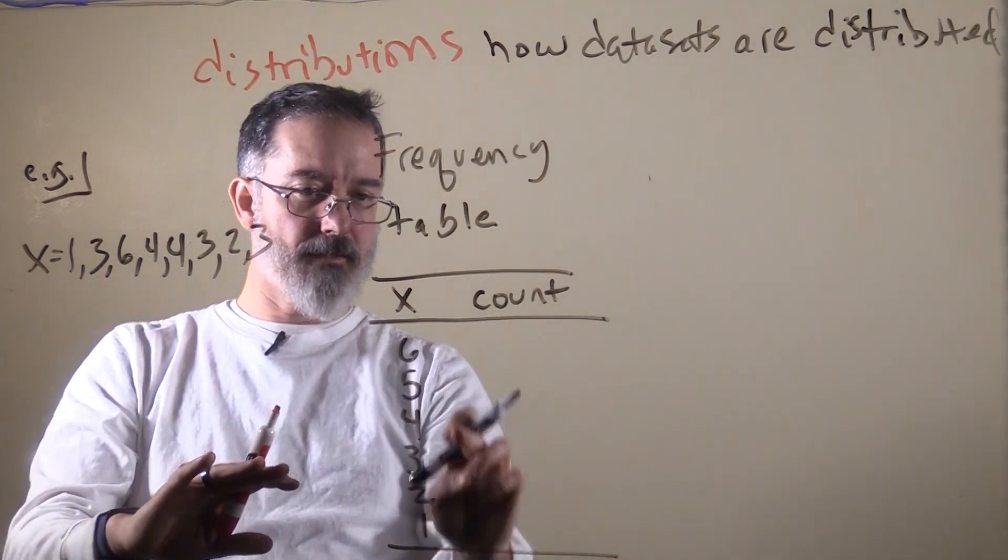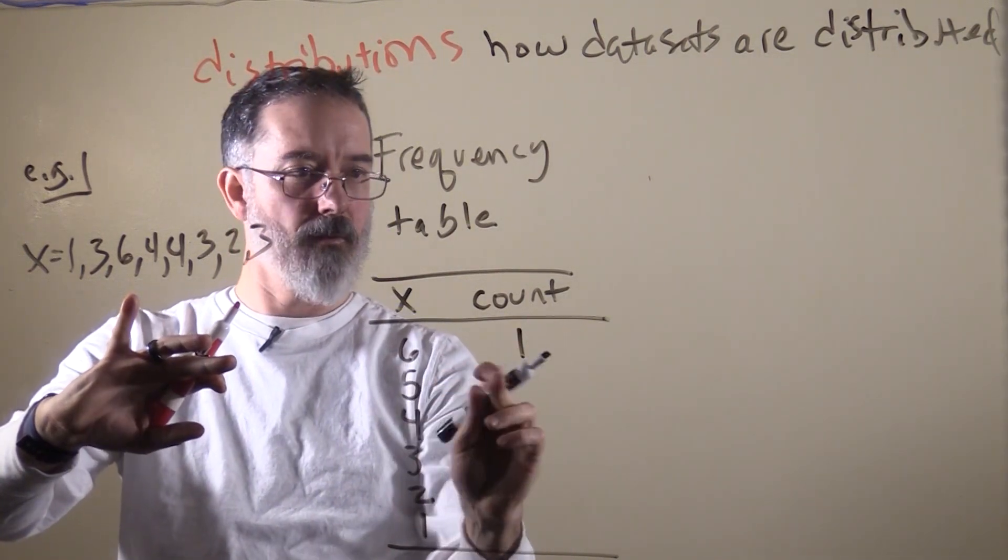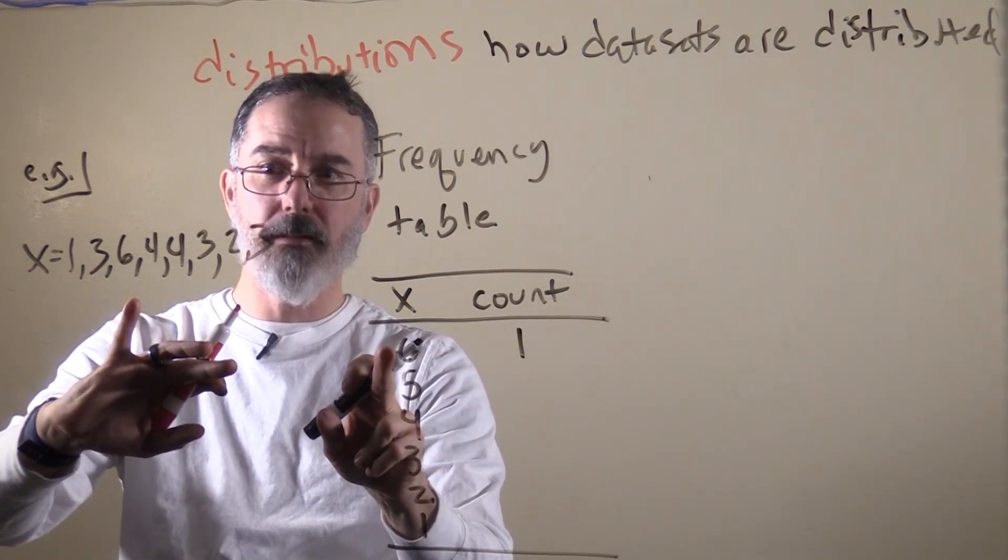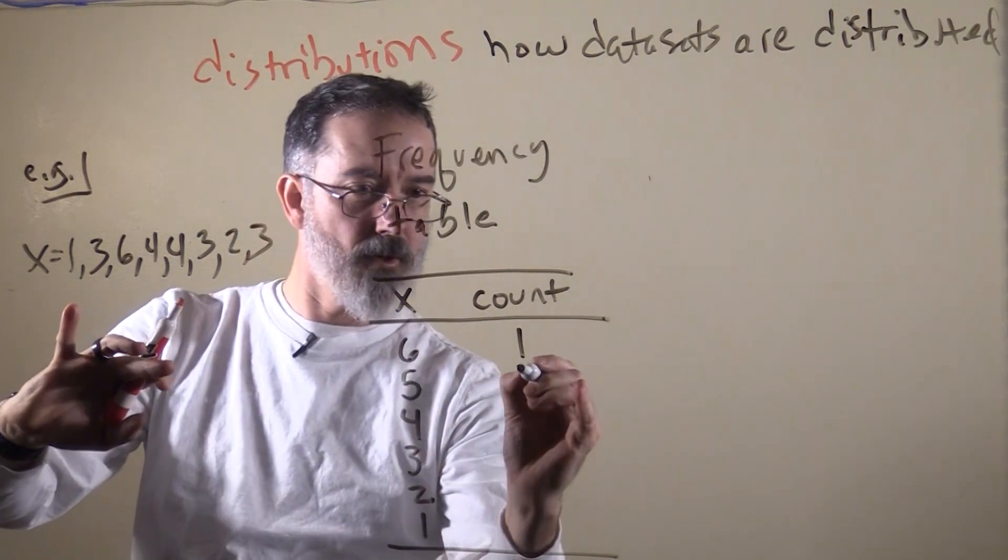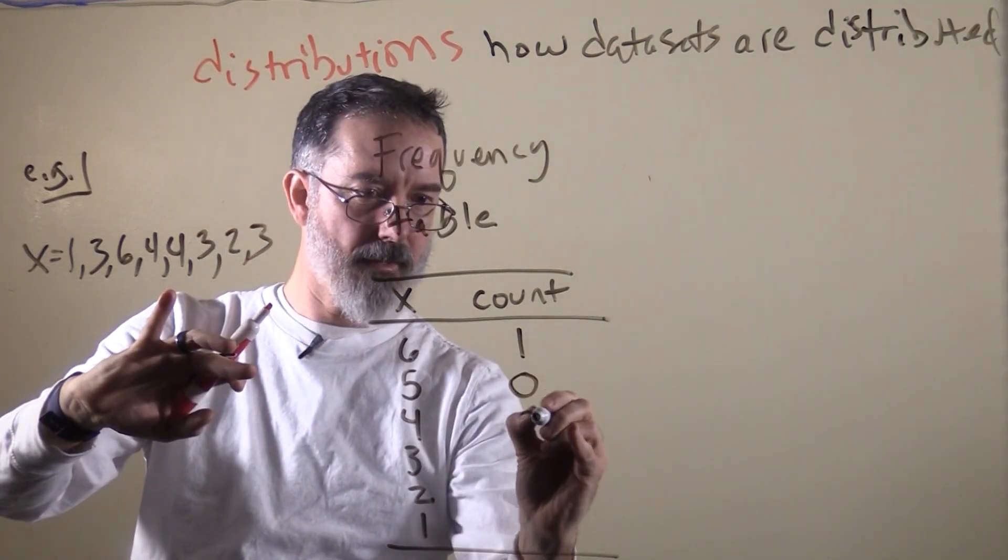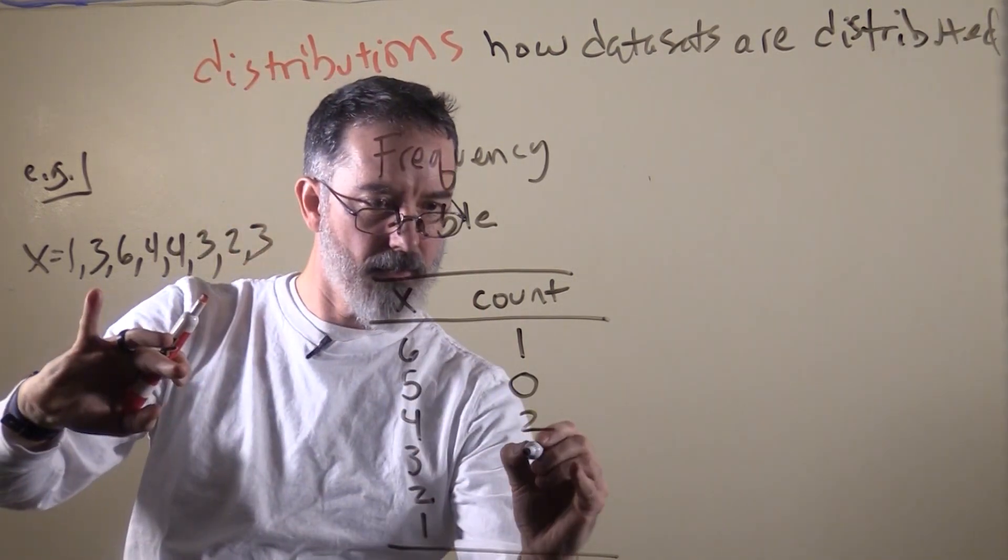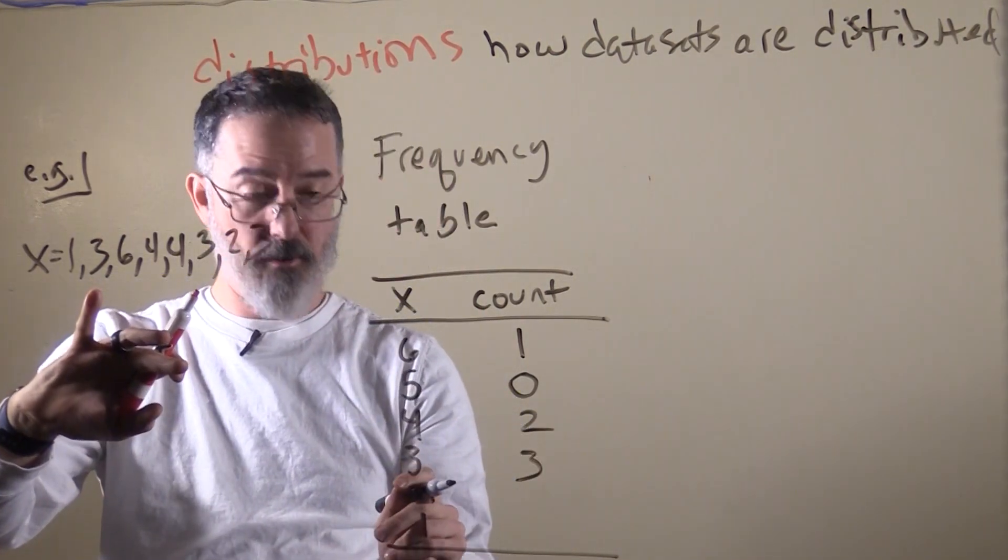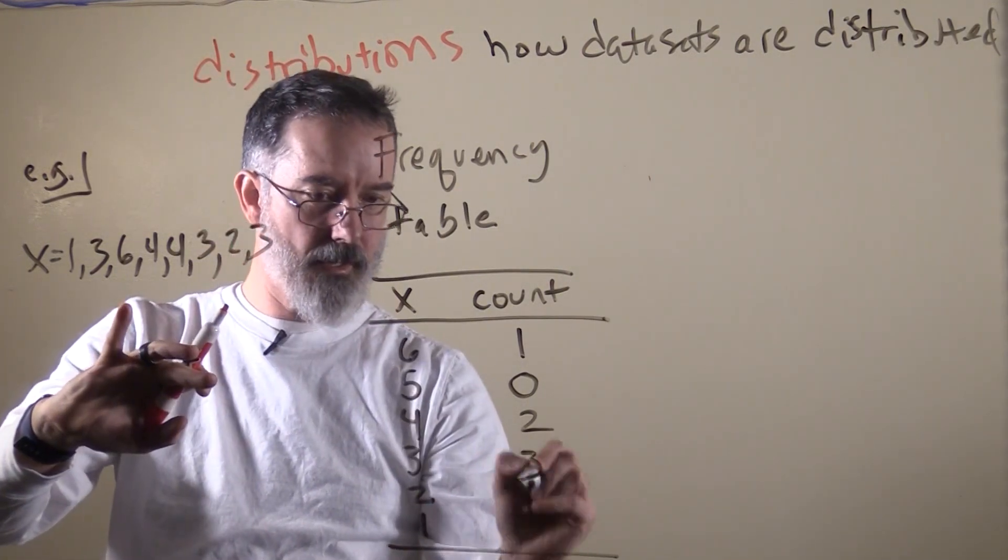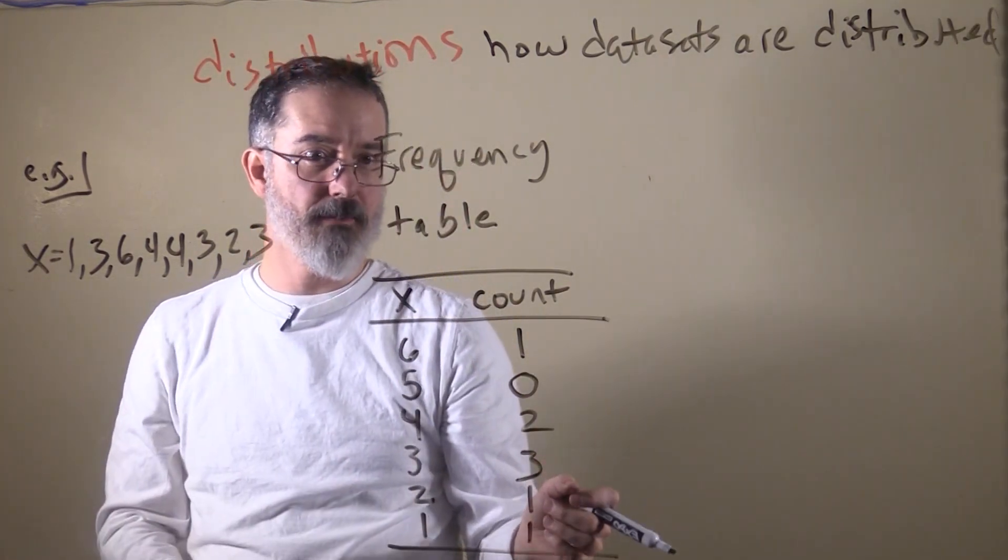So now we are going to count how many of each of these values showed up. There was 1 kid that ate 6 cookies. For 5, there is no kids ate 5 cookies. 2 kids had 4 cookies. 1, 2, 3 kids had 3 cookies. 1 kid had 2 cookies, and only 1 had 1 cookie. There it is. That is the frequency table.